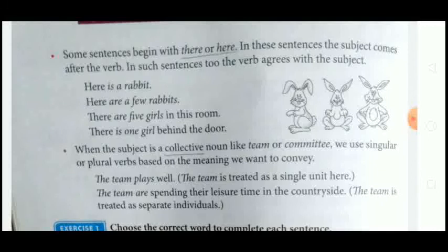'There are five girls in the room' — subject 'girls' is plural so verb 'are' is plural. 'There is one girl behind the door' — subject 'girl' is singular so verb 'is' is singular. Though the placement of verb and subject is changed in these sentences, the rule remains the same: singular subject uses singular verb, and plural subject uses plural verb.